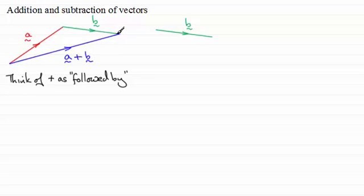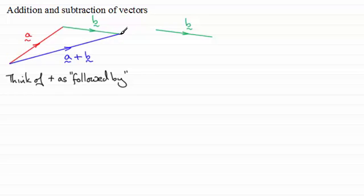You might like to think of it as moving from one position to another. I go from this point to this point, and then from this point to this point. So I could have taken the shortcut and gone from here directly to here — that's the vector a plus b.